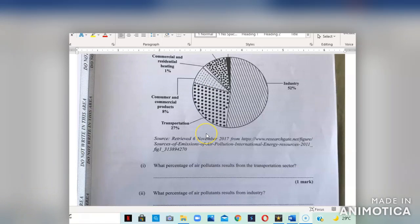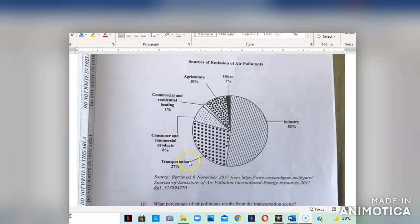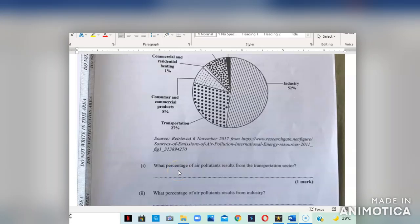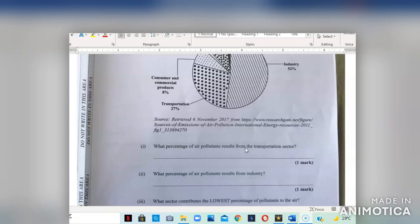Question A part 1 asks, what percent of air pollutants result from the transportation sector? Right ahead, you see transportation. Your answer is 27%. It's 27% from the transportation sector. Part 2 asks, what percent of air pollutants result from industry? You go back to the chart and you look for industry. You have industry at 52%. So 52% of air pollution results from the industry.